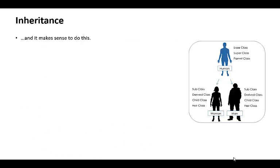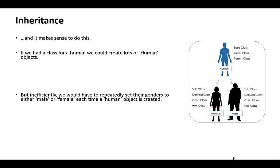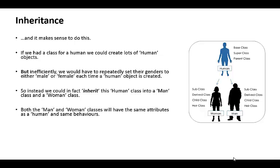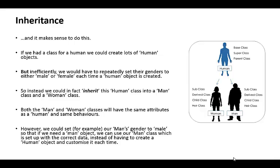Let's look at why we might want to do that, because it does make sense to inherit certain characteristics from other classes. If we had a human class, we could create lots of human objects, but it would be inefficient because we'd want to set half of those objects' genders to male and the other half to female every single time. Instead, we can inherit all attributes and methods from the human class into the man and woman class, but overwrite the gender attribute to male so we don't have to do that for every object created.